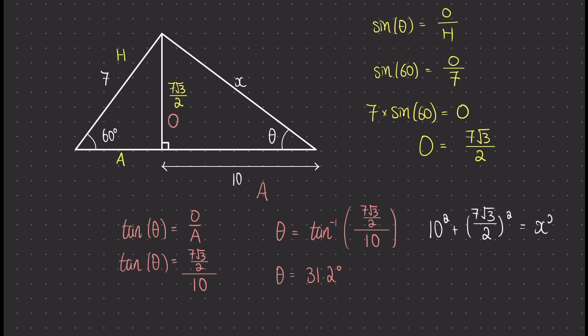So a squared plus b squared equals our hypotenuse squared. So I'm squaring 10, squaring this 7 root 3 over 2, and setting that equal to our hypotenuse x squared. Now I can square root both sides. Now I'm going to round this answer to a decimal, so I find that is 11.7.